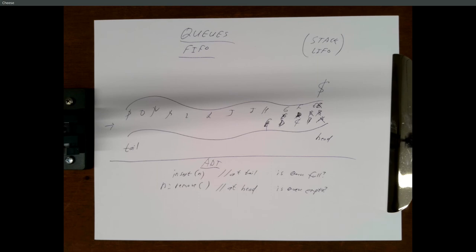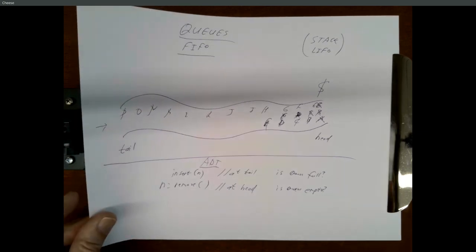There are lots of different ways we can implement queues. As the writer of a main program using a queue, we'd mostly be calling insert and remove, maybe an initialize function to get things going. We can implement this with an array, with a linked list — the implementation details are on the other side of the firewall from the abstract data type view. But keep thinking about the abstract view.